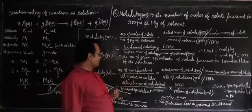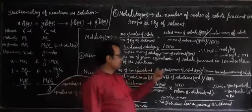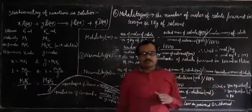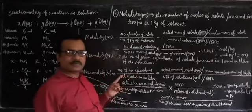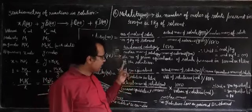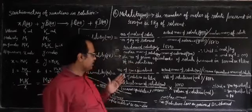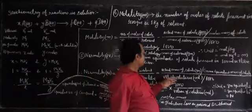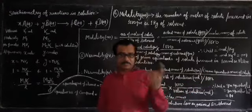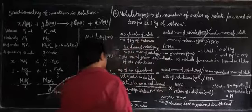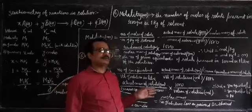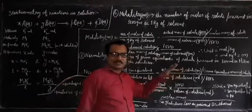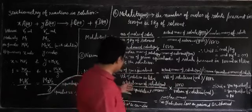To find the number of gram equivalents, take the actual mass of the solute in grams divided by the gram equivalent mass of the solute. When actual mass is divided by molar mass we get moles; when divided by gram equivalent mass we get gram equivalents. Volume in ml divided by 1000 gives litres. After rearranging, the unit of normality is gram equivalents per litre, or gram equivalent litre⁻¹, represented by capital N.